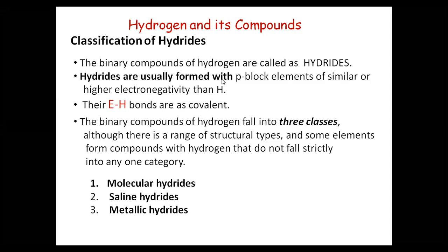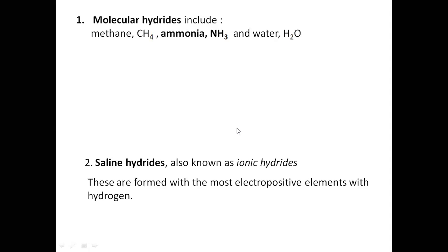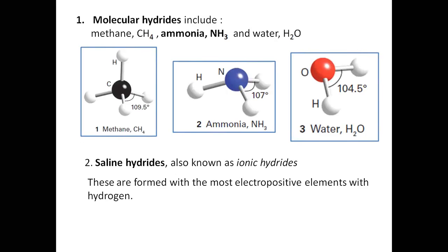Generally, the binary compounds of hydrogen are of three types. There are three classes of hydrides. There is a range of structural changes, but we can study them in three classes. The first is molecular hydrides, the second is saline hydrides, and the third type is metallic hydrides. Examples of molecular hydrides are methane, ammonia, and water — these three structures.